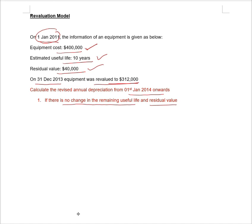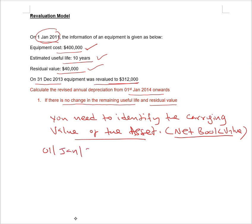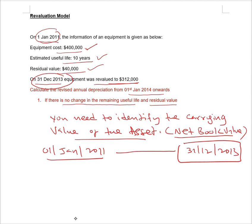In order to make adjustments for the revaluation, first and foremost what you need to do is identify the carrying value — that is, the net book value of the asset. So let's record this particular transaction. The asset was purchased on 1st January 2011 and revalued on 31st December 2013.